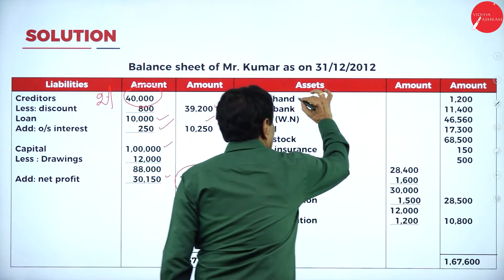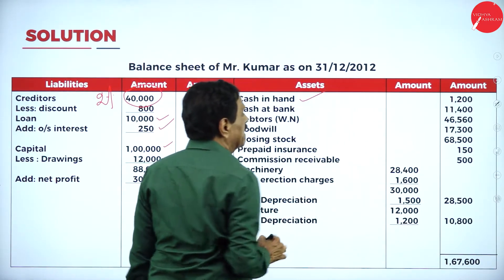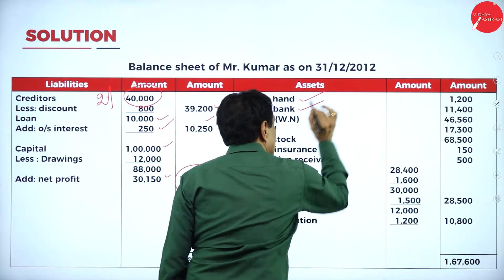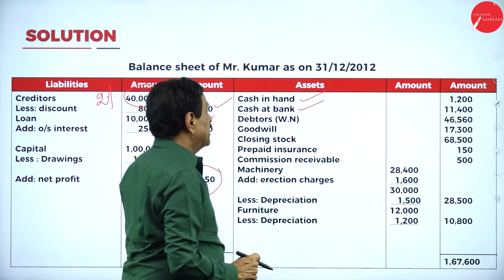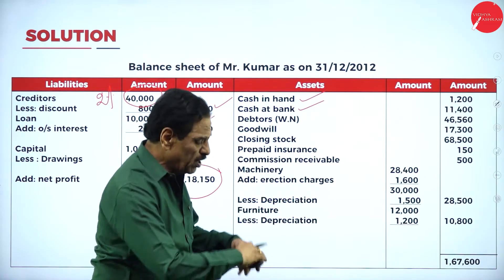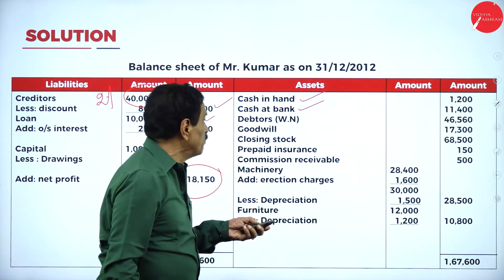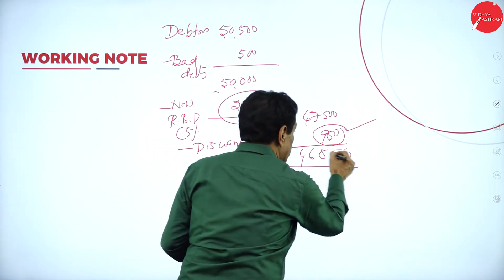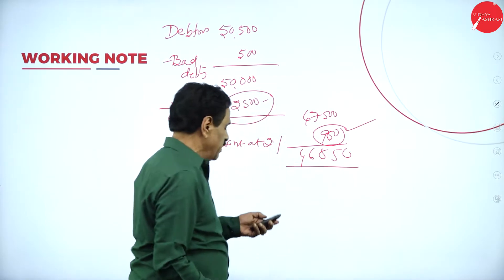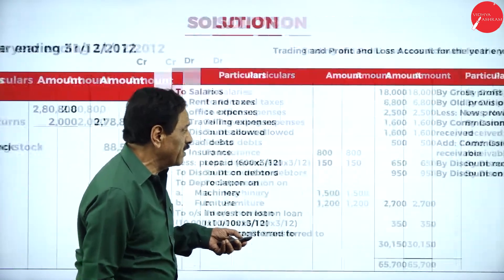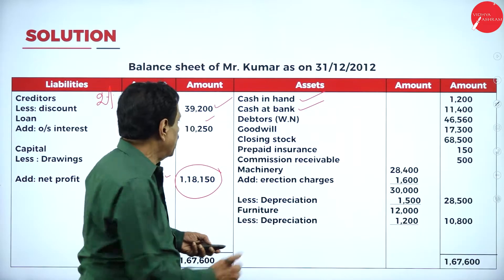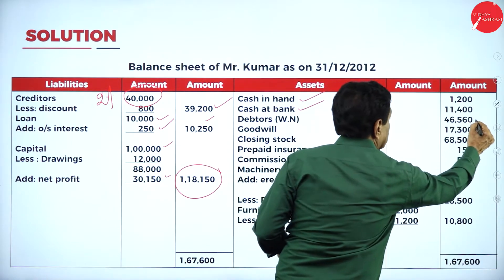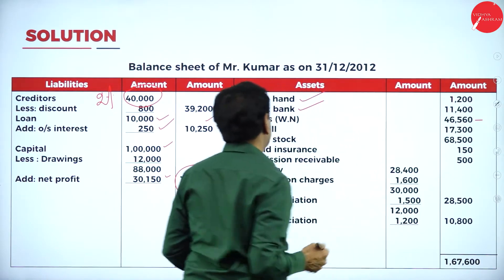Cash in hand is an asset. Cash in bank is an asset. Debtors as per the working note — I will show you — come to 46,550.